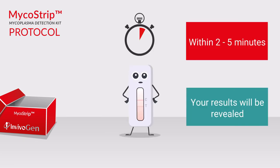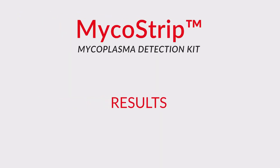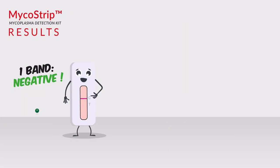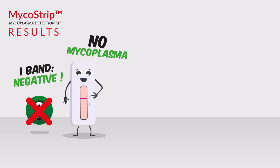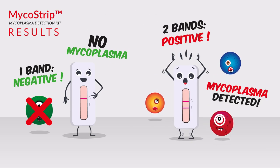Stop the reaction and load the cassette. Within two to five minutes your results will be revealed. One band is a negative result and two bands is a positive result.